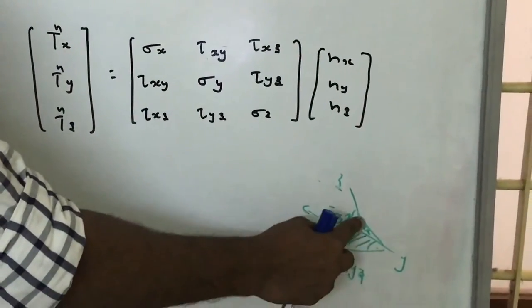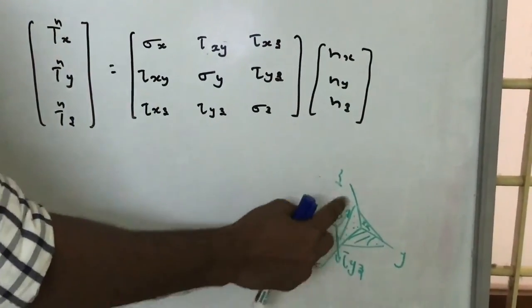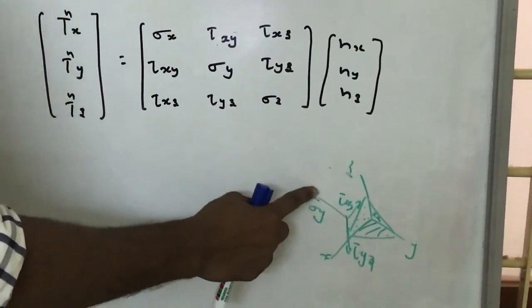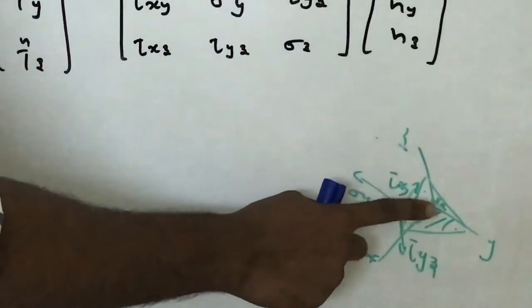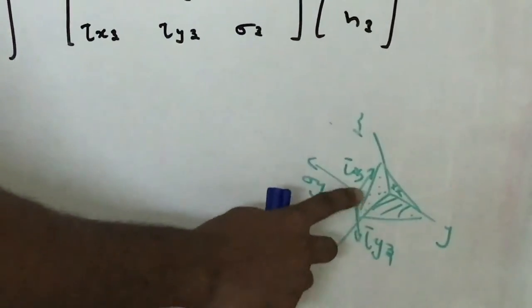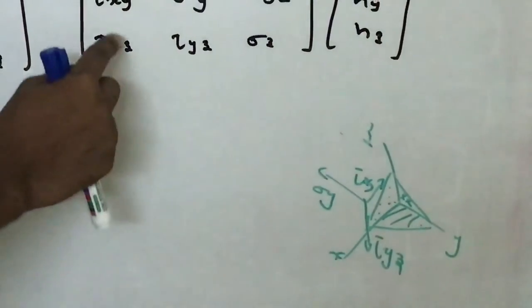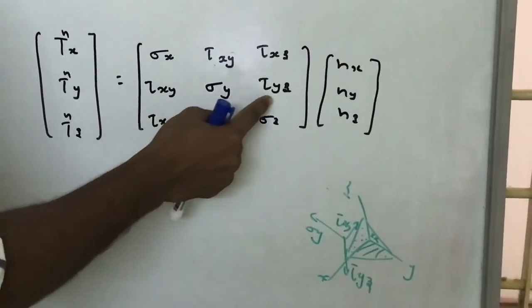Let us first take this plane, xz plane. In xz plane, there is a direct stress sigma y, then there is tau xz, a shear stress and tau yz, another shear stress. And we have shown that here, tau xy, sigma y, tau yz.